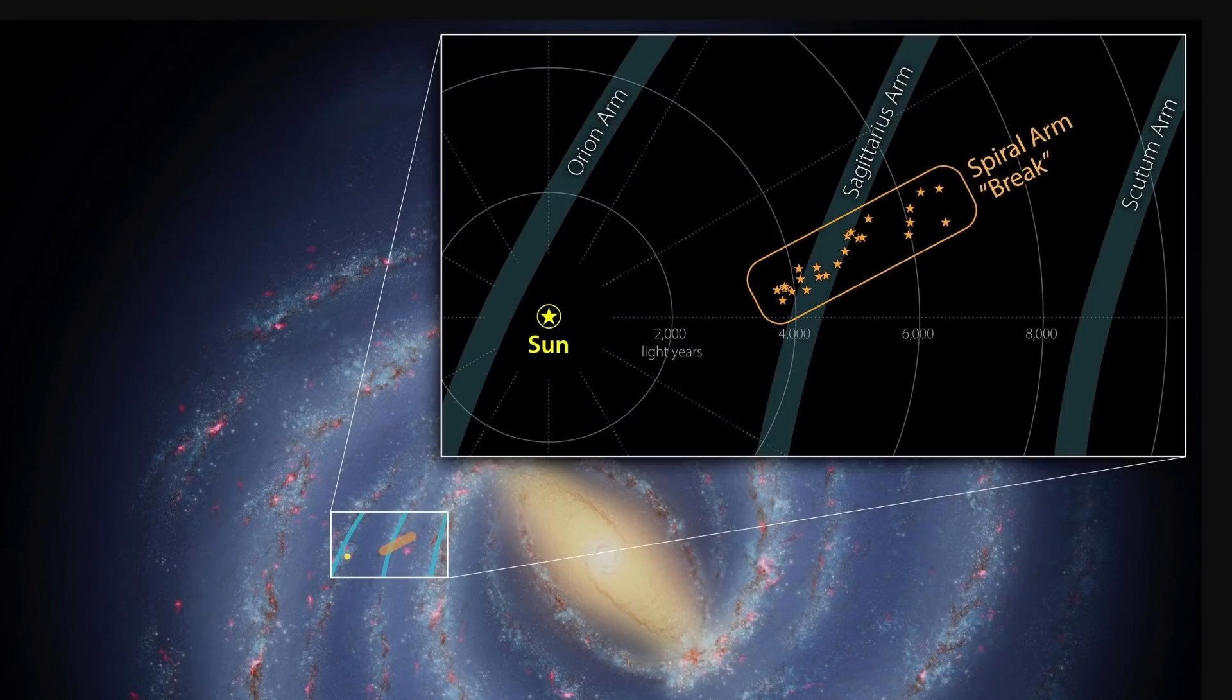Another recent paper came out not so long ago suggesting something unusual in one of the galactic arms of our galaxy. One of the arms in the Milky Way seems to have some kind of a break, a spiral arm break.